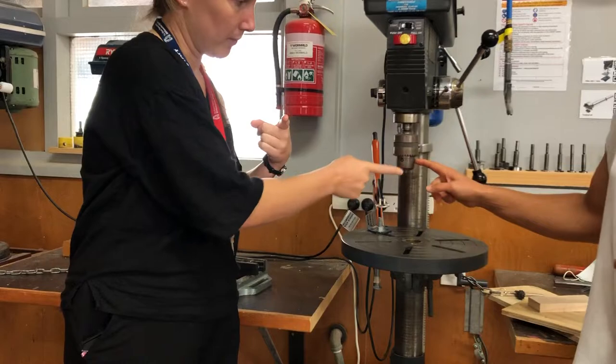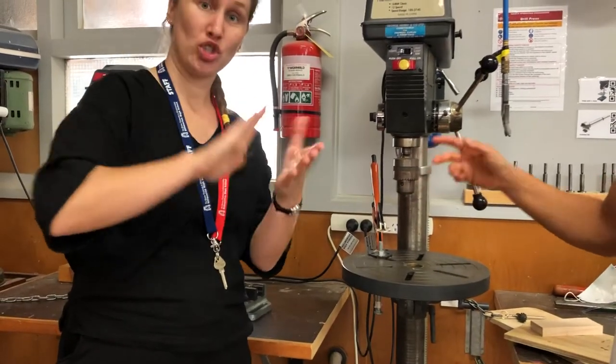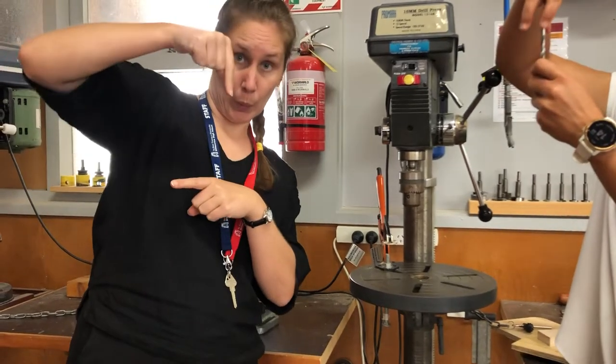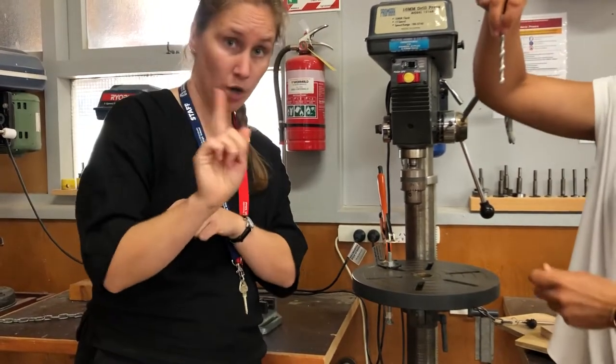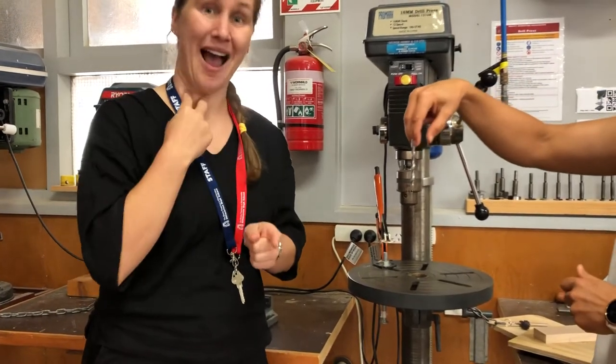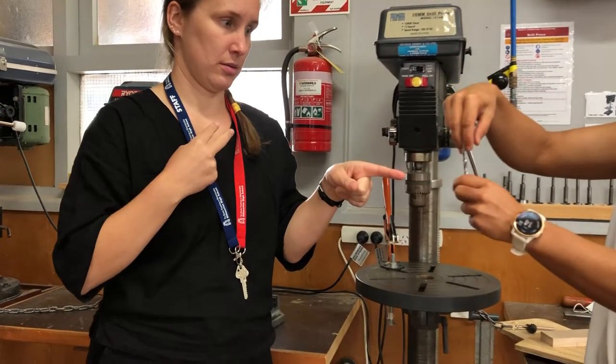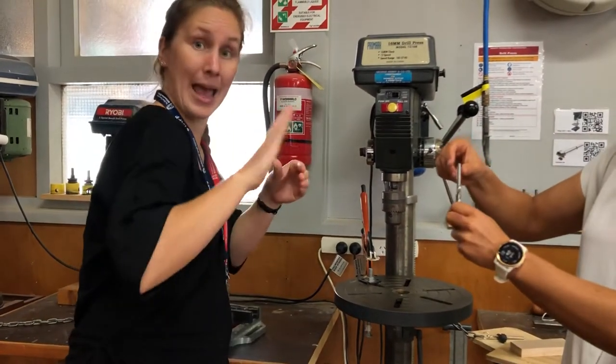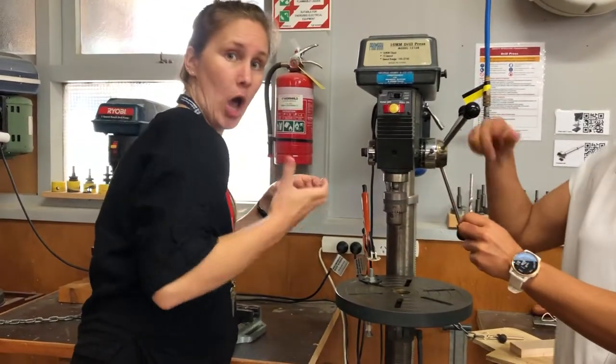This is the chuck and the chuck in this case has three jaws. Now the problem we have when we put the drill bit in is how we grip the drill bit. Occasionally it can get stuck in just two jaws like that. So what we need to do is slide it in, tighten it by hand, and then check that we have it in level just by spinning the drill.